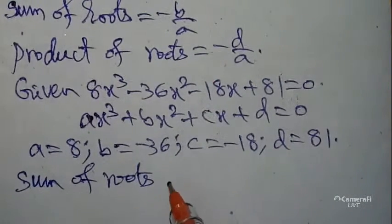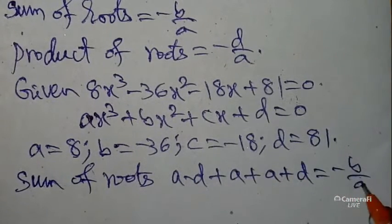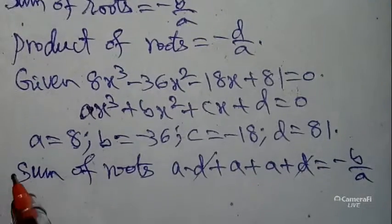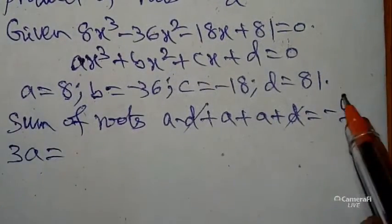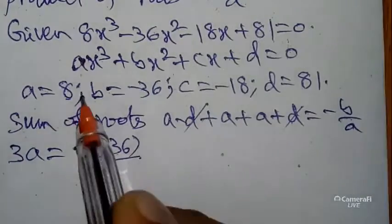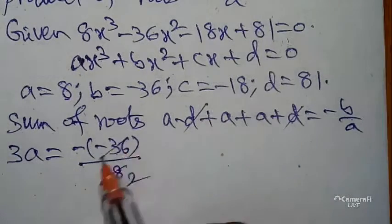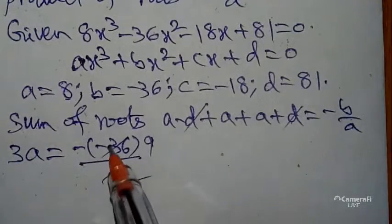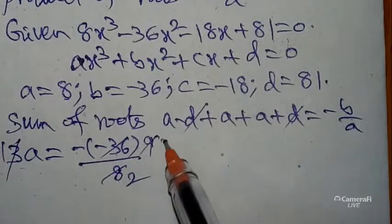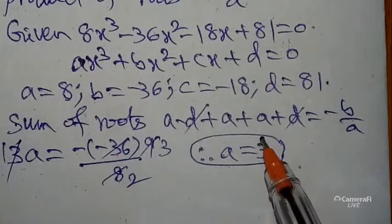I wanted to use the sum of the roots formula first. Sum of the roots means (a-d) + a + (a+d) = -b/a. This gives 3a = -(-36)/8. Minus minus gets canceled, so 3a = 36/8 = 9/2. Therefore, a = 3/2. Very simple to get 'a' using the sum of the roots.